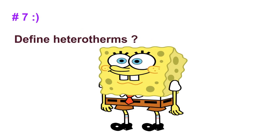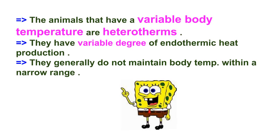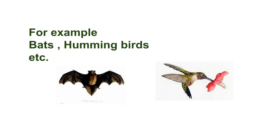Question number seven: define heterotherms. Animals that have a variable body temperature are heterotherms. They have a variable degree of endothermic heat production and generally do not maintain body temperature within a narrow range. For example, bats and hummingbirds are heterotherms.